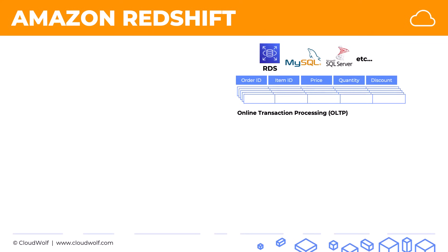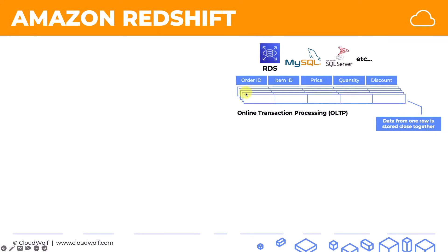What does that mean? Well, that means that data on disk is actually stored in a specific way. When you look at the data from each individual row, all the elements of a single row — all this data — is stored close together on disk. So if you look at the disk, you'll see all the data of one row, then next to it all the data of the next row, then all the data of the second row, then the third row. So the price of row four will be stored next to the quantity of row four, next to the discount of row four.